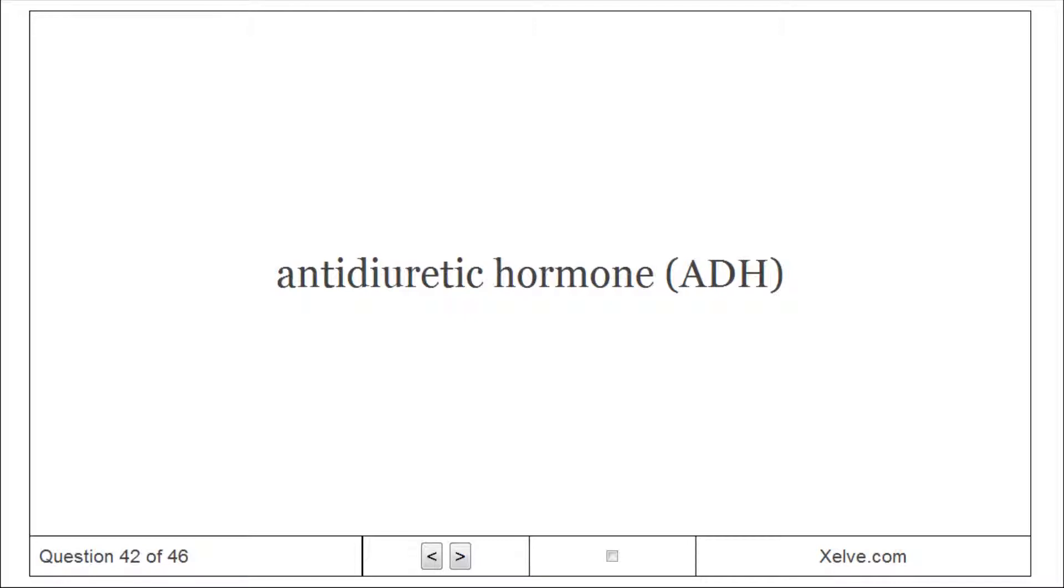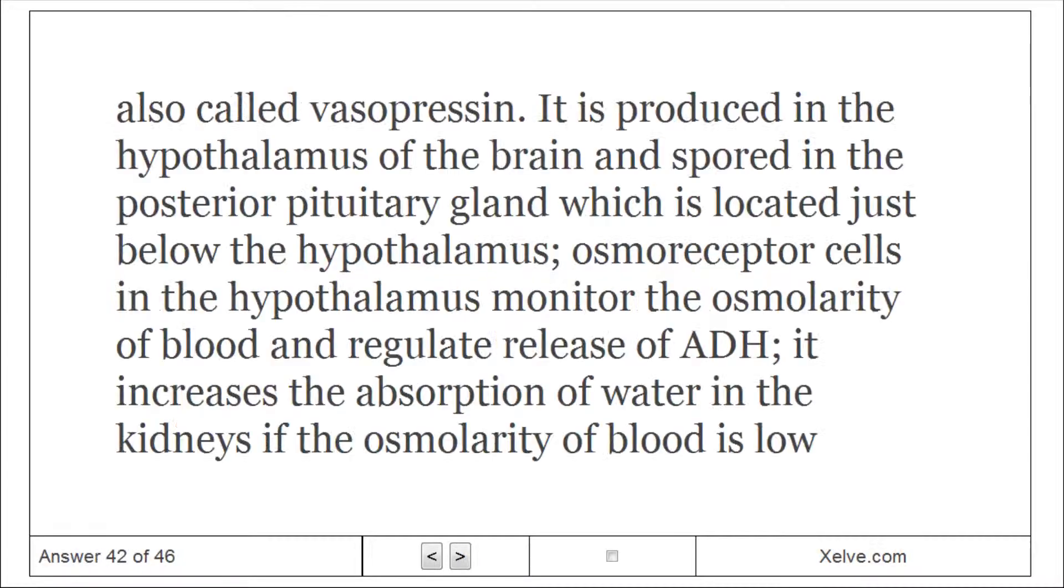Anti-diuretic hormone, also called vasopressin, is produced in the hypothalamus of the brain and stored in the posterior pituitary gland which is located just below the hypothalamus. Osmoreceptor cells in the hypothalamus monitor the osmolarity of blood and regulate release of ADH. It increases the absorption of water in the kidneys if the osmolarity of blood is low.